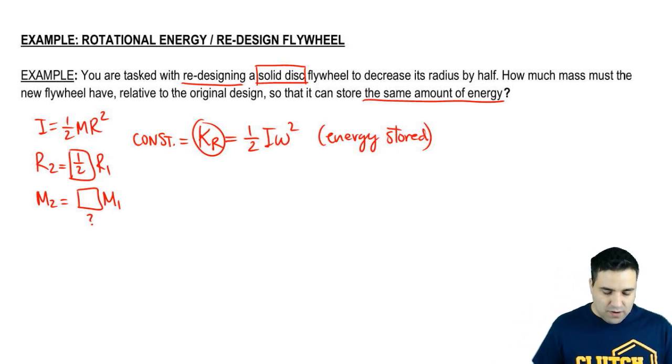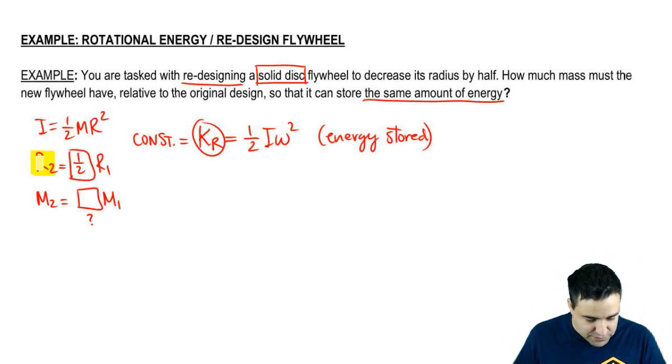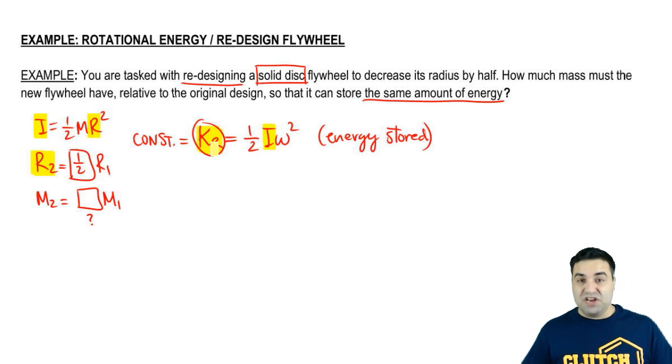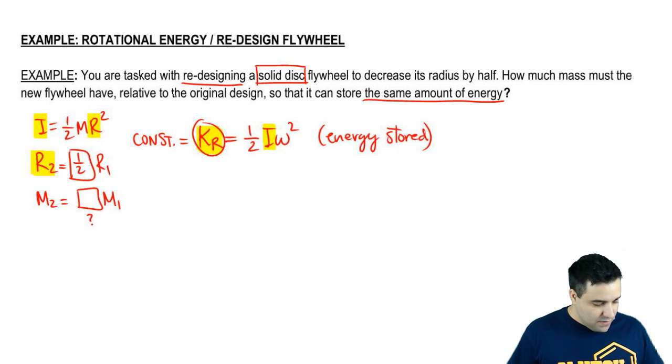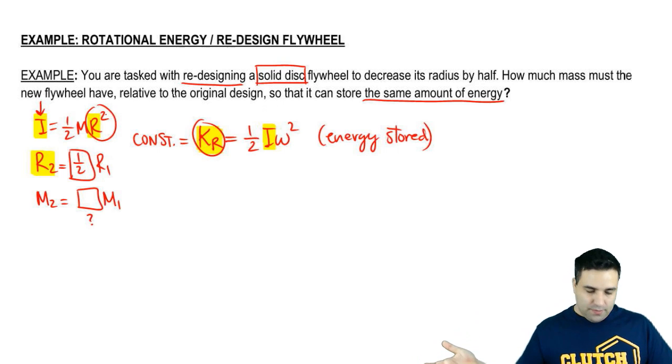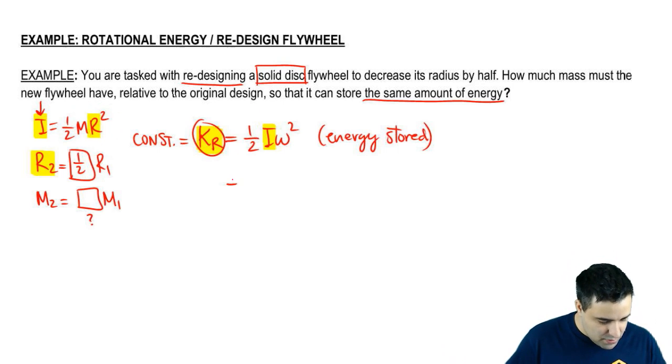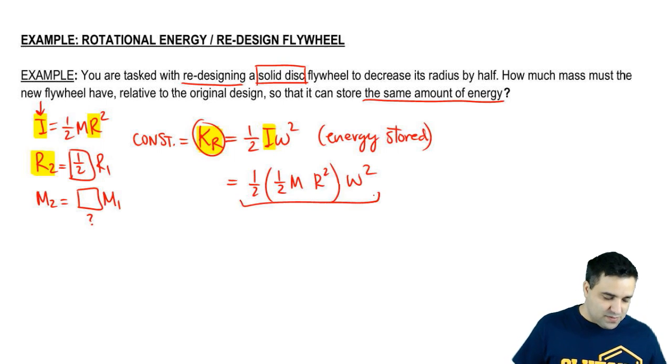So how do you do this? Well, if R changes right here, then I is going to change. And if I changes, K is going to change. And that's bad news. So how do we change something else so that the K doesn't change? Well, for the K not to change, you have to make sure that the I doesn't change. And for the I not to change, you have to cancel out changing R with changing M. So what I'm going to do here is I'm going to expand this equation. Half I is half MR squared omega squared. So now I see all the variables that affect my K. And again, the K has to remain constant.